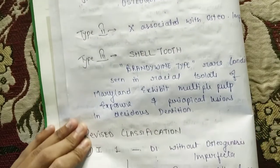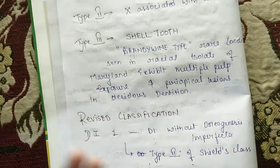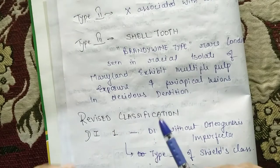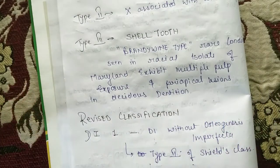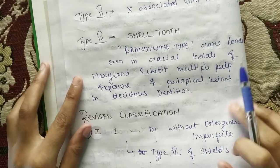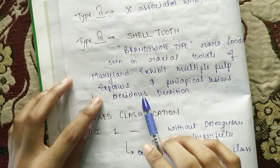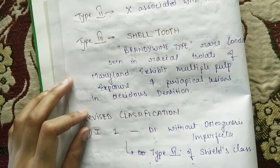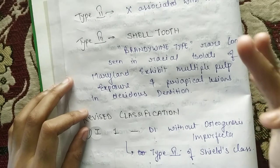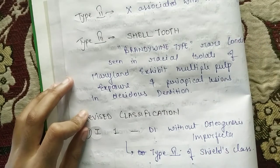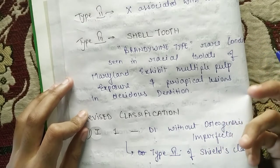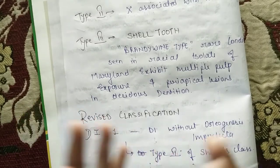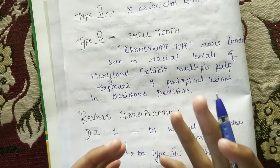Type 3 was seen in a racial isolate of Maryland which exhibits multiple pulp exposures and periapical lesions in deciduous dentition, i.e. primary teeth. It is seen in Type 3, and the tooth structure shows a shell tooth appearance. It is a very rare condition.